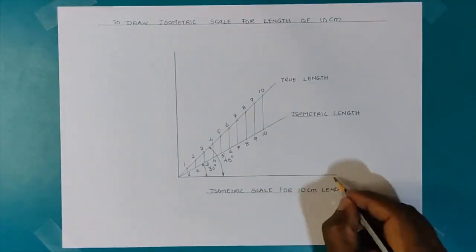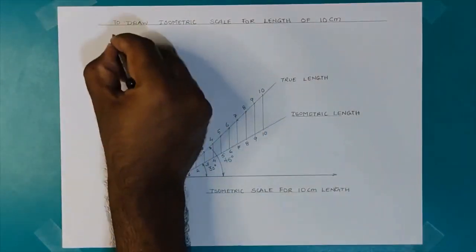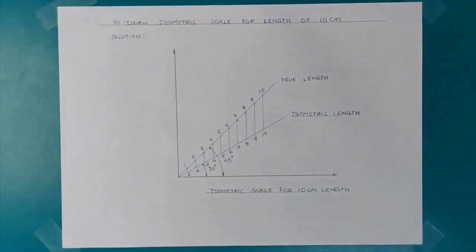So this is the given solution that was desired. So I hope you were able to solve the problem of how to draw an isometric scale for length 10 centimeters using this video. Thank you for your patient listening.